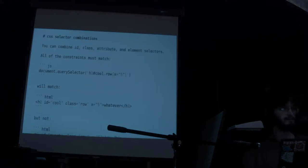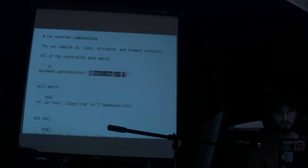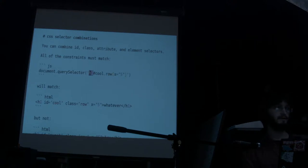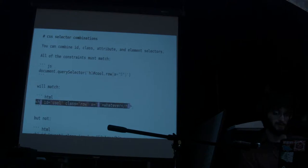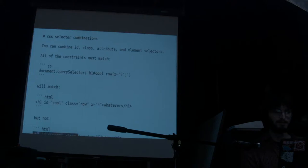Importantly, you can combine CSS selectors. All of these constraints are true for a single element — this has to be an element named h1, it has to have an ID of cool, a class name of row, and an attribute of 5. This h1 tag will match, but if any one of those is not matched — like if we change the ID from cool to sweet — then it won't match.